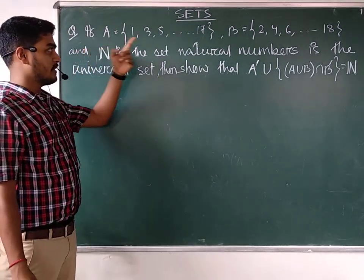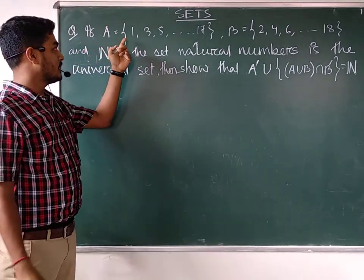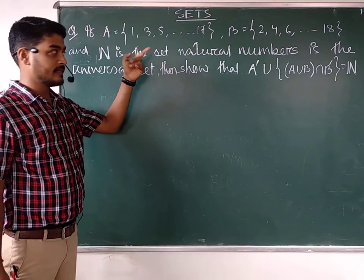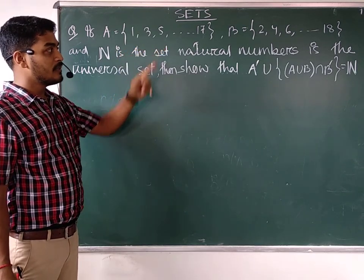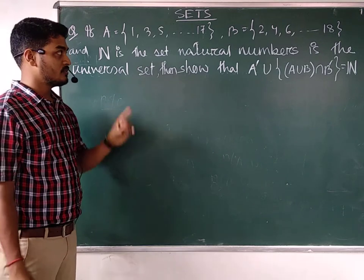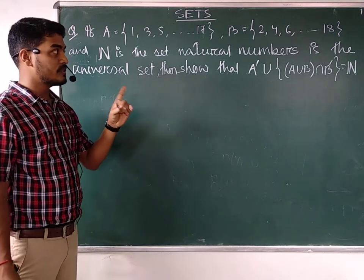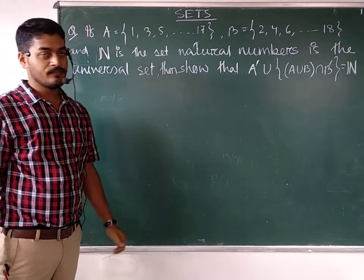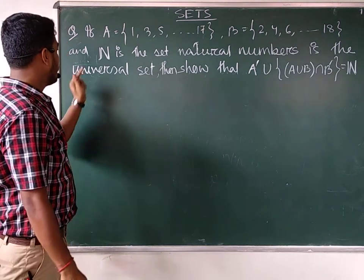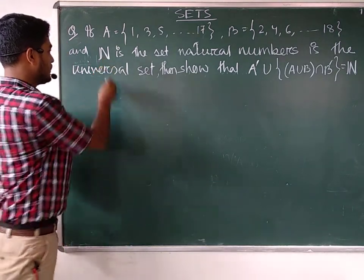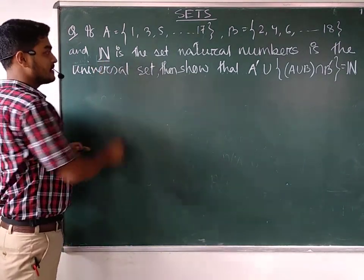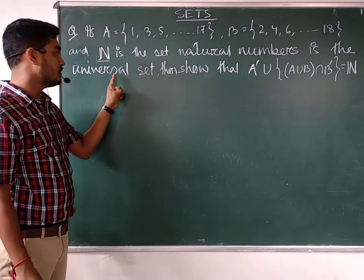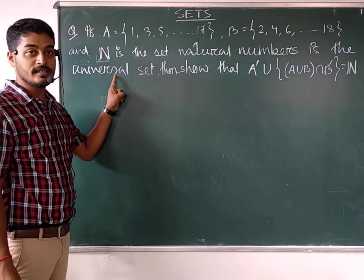If the set A contains odd numbers 1, 3, 5, 17 — all the odd numbers are there. And the set B contains some of the even numbers: 2, 4, 6, up to 18. And bold letter N is the set of natural numbers, and it will behave just like the universal set here in this case.